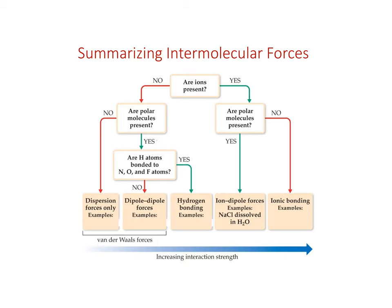Last class, we looked at intermolecular forces — basically, how do we have an understanding about the physical properties of a substance? We go to the intermolecular forces, and that's going to be determined by the polarity. Do we have London dispersion forces, dipole-dipole forces, hydrogen bonding, or ion-dipole forces? Those help determine physical properties like boiling point, melting point, or viscosity. Today, we're going to look at viscosity and surface tension and how they're a product of intermolecular forces.